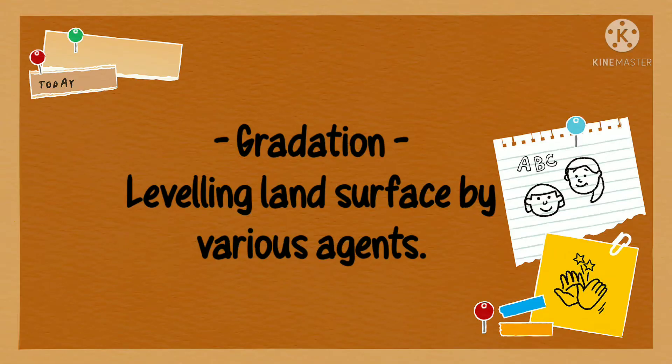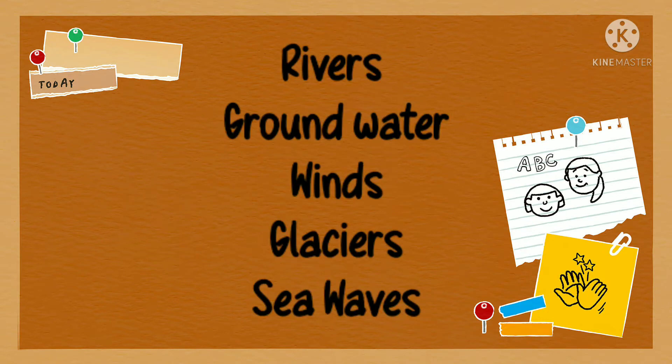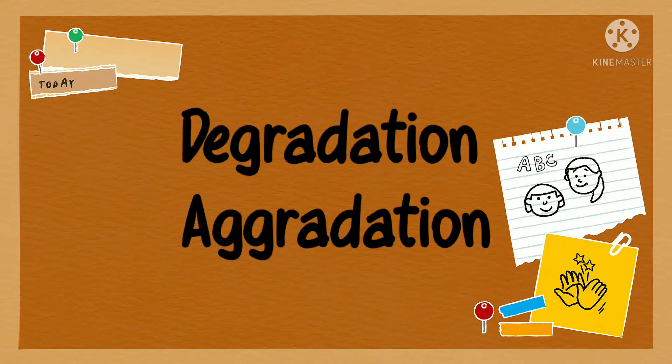Gradation is the process of leveling of the land by means of natural agents like rivers, groundwater, winds, glaciers and sea waves. They take place in two ways: degradation and aggradation.